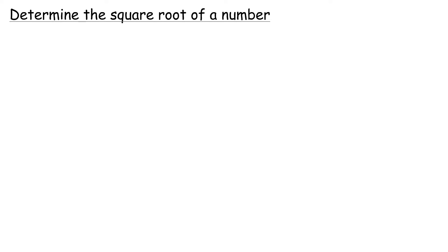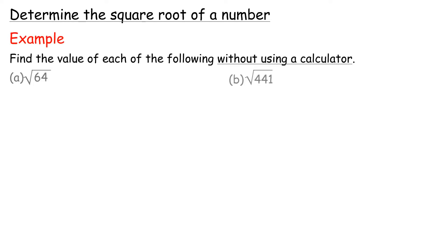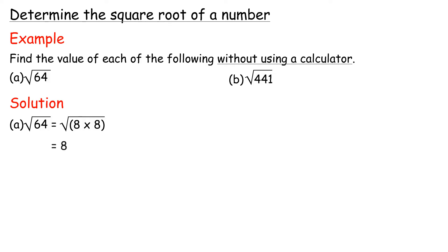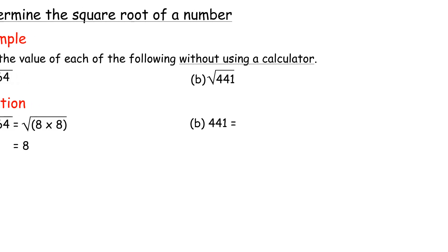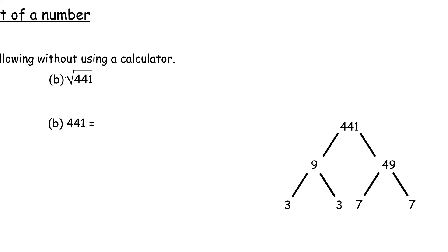Determine the square root of a number. Example: Find the value of each of the following without using a calculator. Solution A: Square root of 64 equals square root of 8 times 8 equals 8. B: Square root of 441 equals 3 times 3 times 7 times 7, which equals 3 times 7 times 3 times 7, equals 21 times 21.